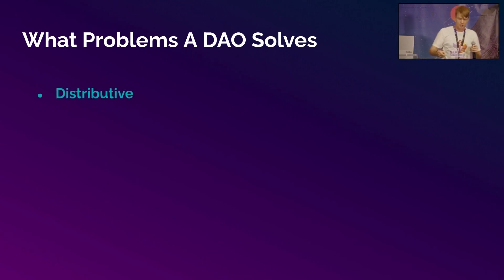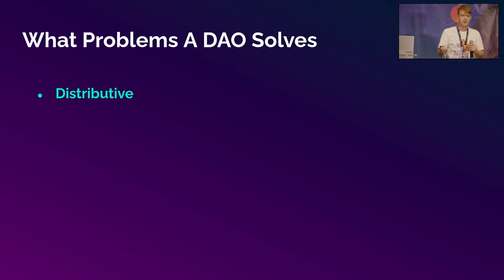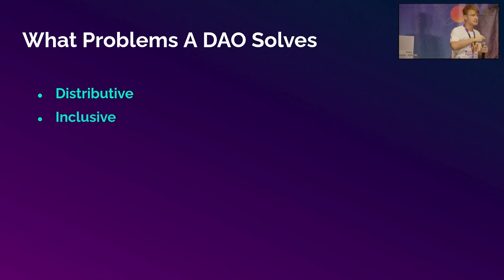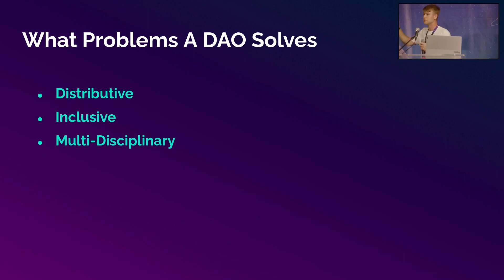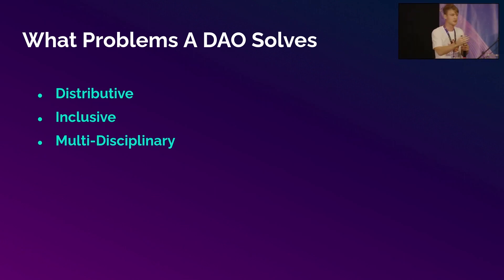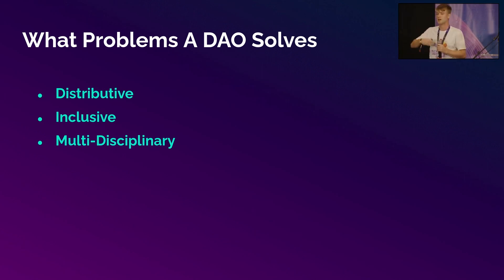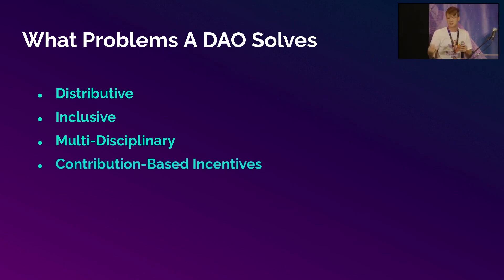Moving forward, what problems does a DAO solve? First, it's distributive — anybody with an internet connection can come in and participate in a DAO. It's inclusive — it's not role-based or restrictive; anyone can come in, anyone can contribute. It's also multidisciplinary, so anybody with any range of skills can participate, whether you're a developer or a content creator producing articles. And finally, you get incentives in the form of tokens, so you get rewarded for your contributions.